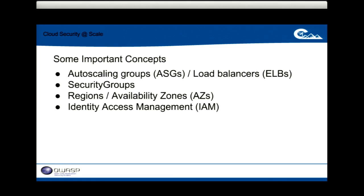The important part is that it's all programmatically accessible. Auto scaling groups are how we deploy things at Netflix — a variable number of machines serving anything at any given time, scaling up when demand increases and down when there are fewer requests. During prime time we end up with double the number of instances versus off-peak. Security groups are Amazon's firewall concept, controlling network access. IAM — Identity Access Management — is how you do access control and provision users.